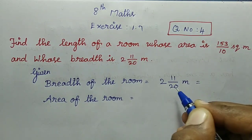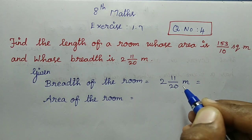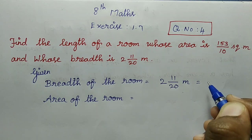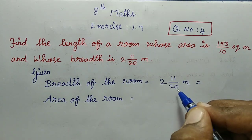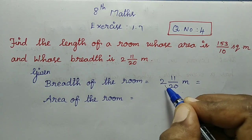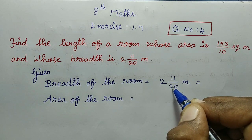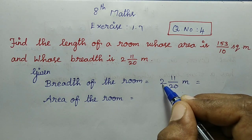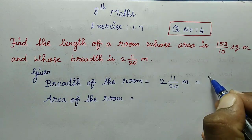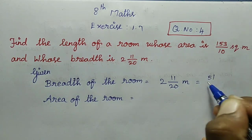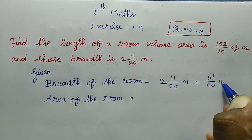This is a mixed fraction, so we will convert it to an improper fraction. We multiply 2 into 20, which gives 40, then add 11 to get 51. So the breadth becomes 51 divided by 20 meters.